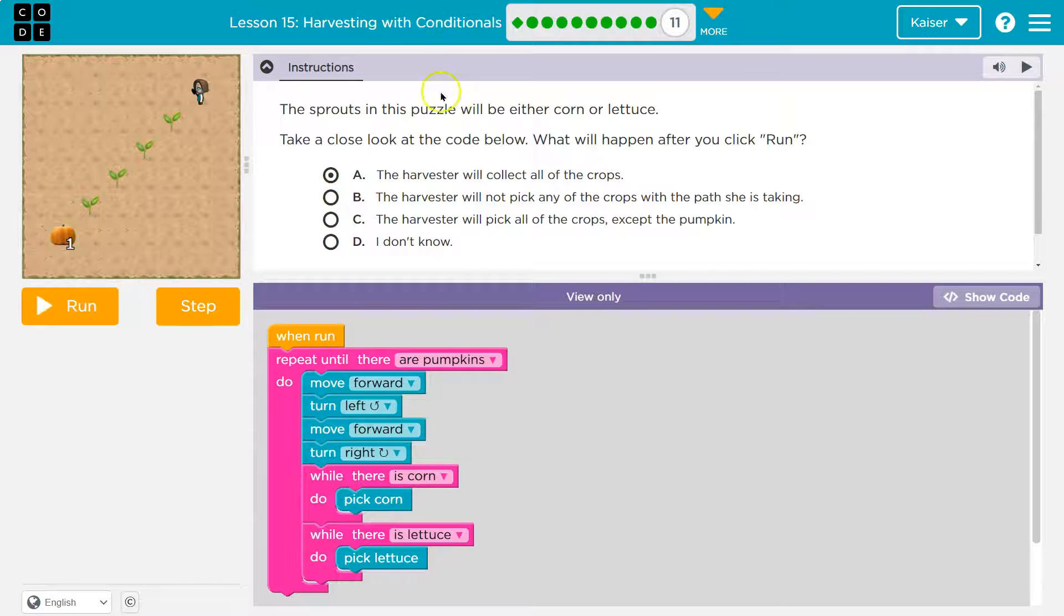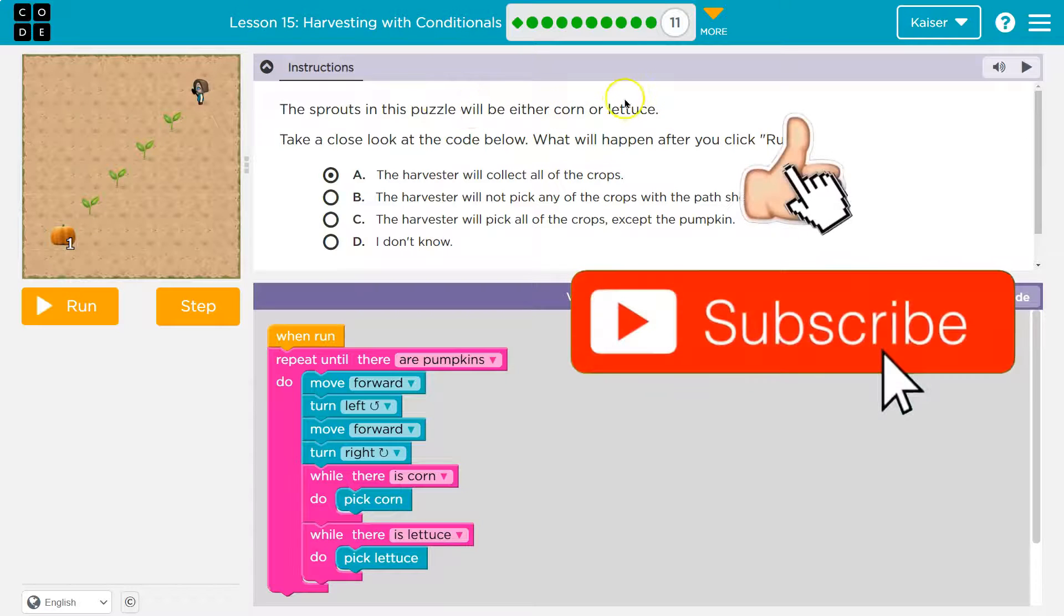But let's talk about this. You need to be thinking to yourself. The sprouts in this puzzle will either be corn or lettuce. Okay, so this, this, okay, corn or lettuce.